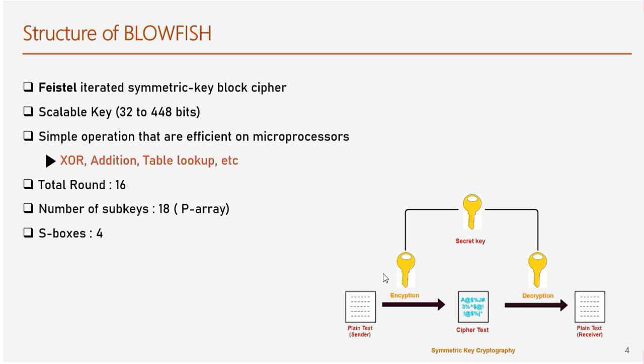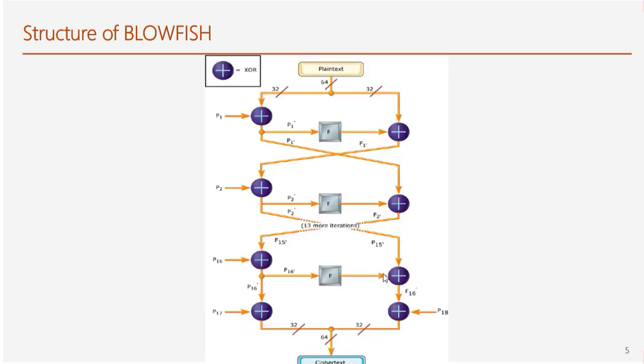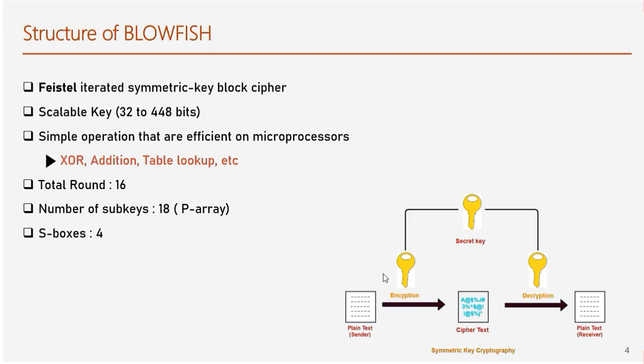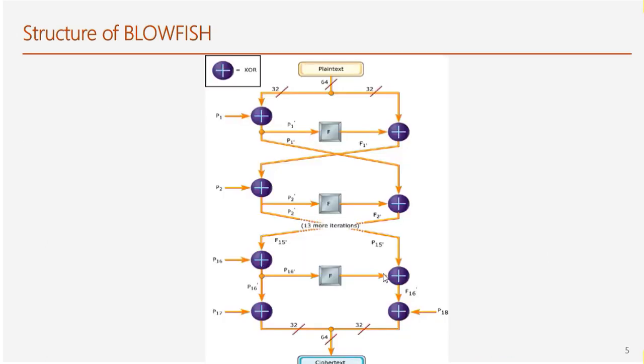The key is divided into 18 sub-keys using P-array containing 8 digits of hexadecimal. In total, 4 S-boxes are used in every function of Blowfish. So this is a pictorial presentation of Blowfish which we will discuss in the next slides.